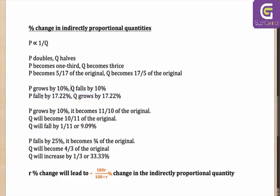Or if P falls by 17.22%, Q will grow by 17.22%. If you are thinking that, let me tell you — you are wrong. This is incorrect. So if this is false, how do we actually solve it? If P grows by 10%, it becomes 11/10 of the original, because it has grown by 1/10 as a fraction.